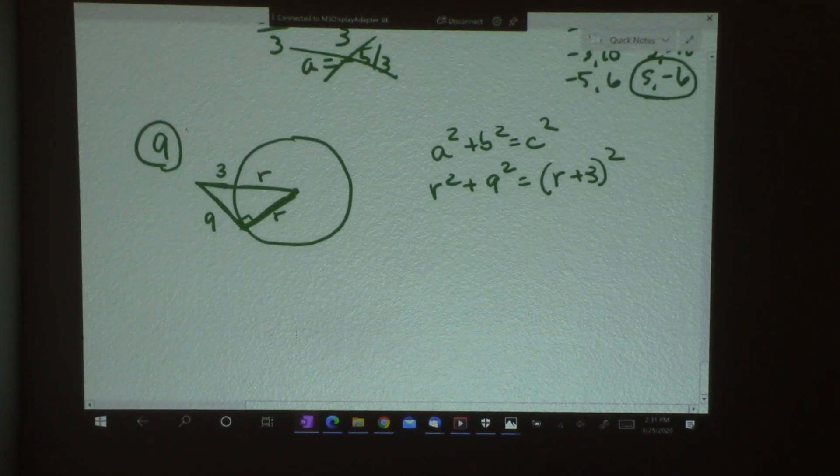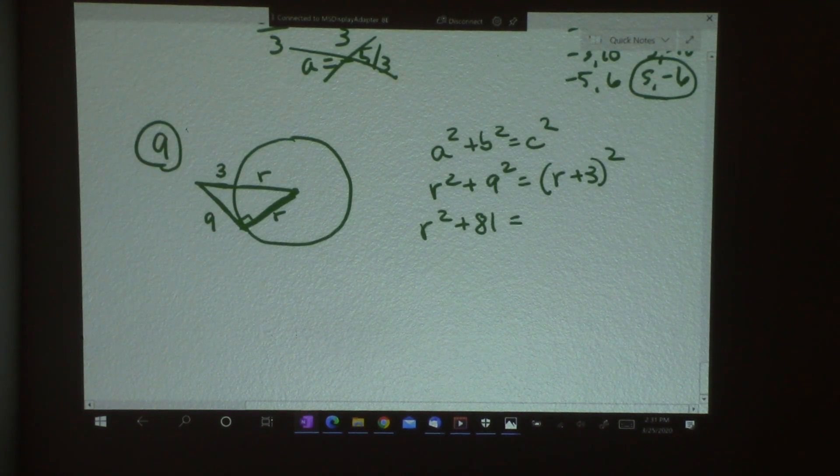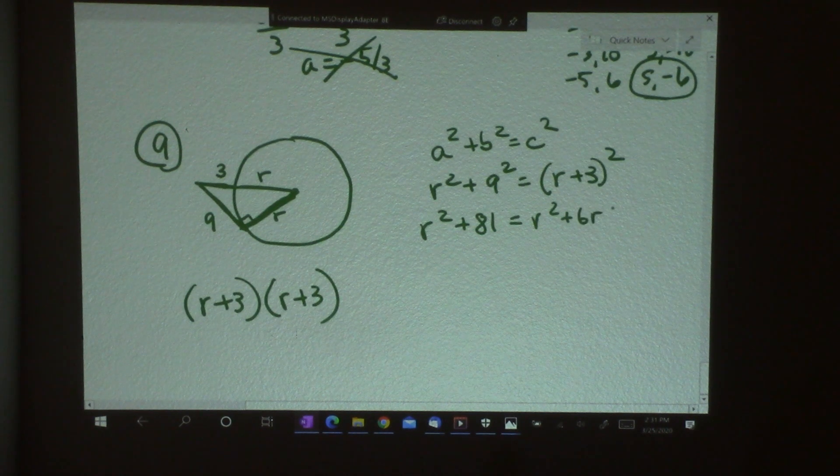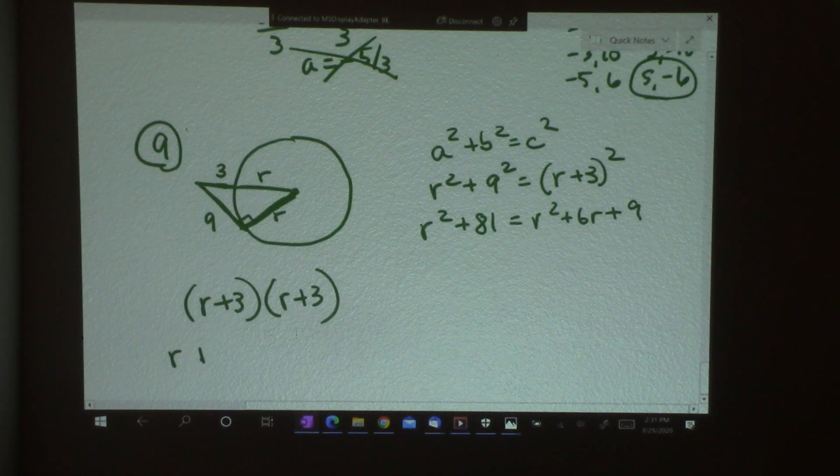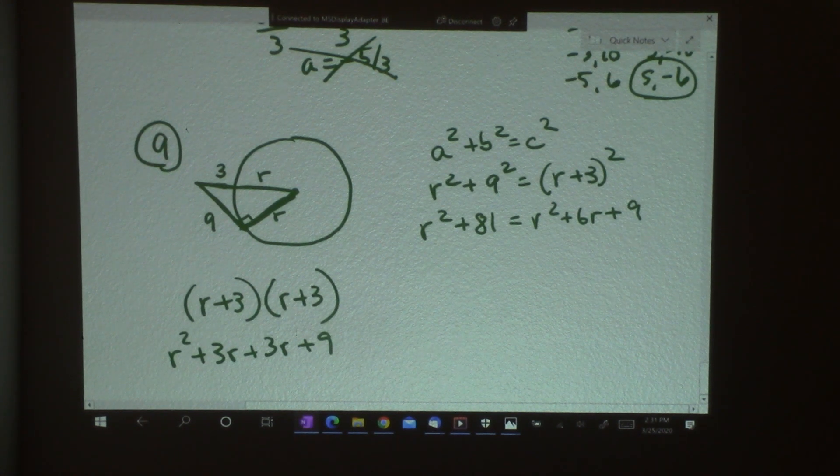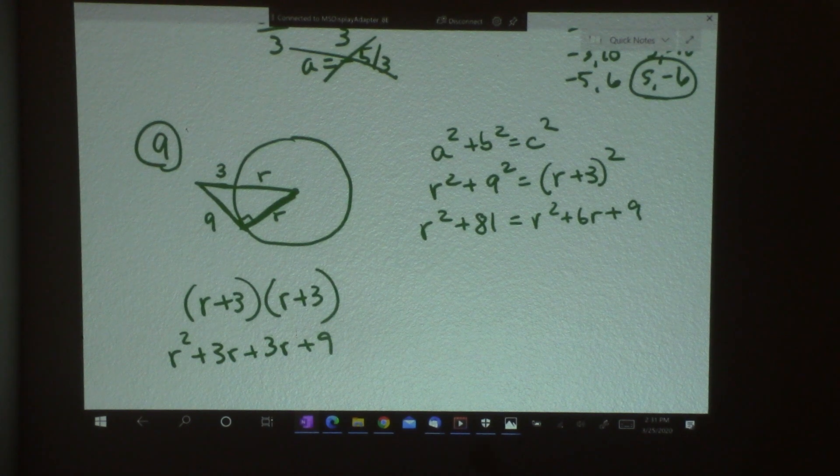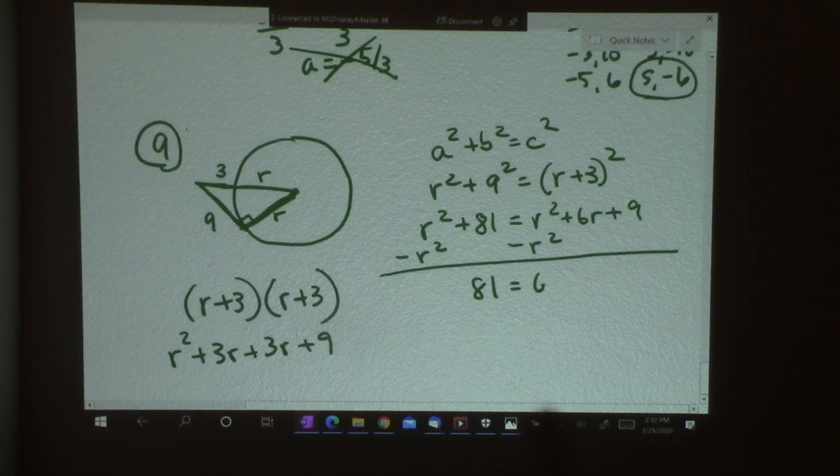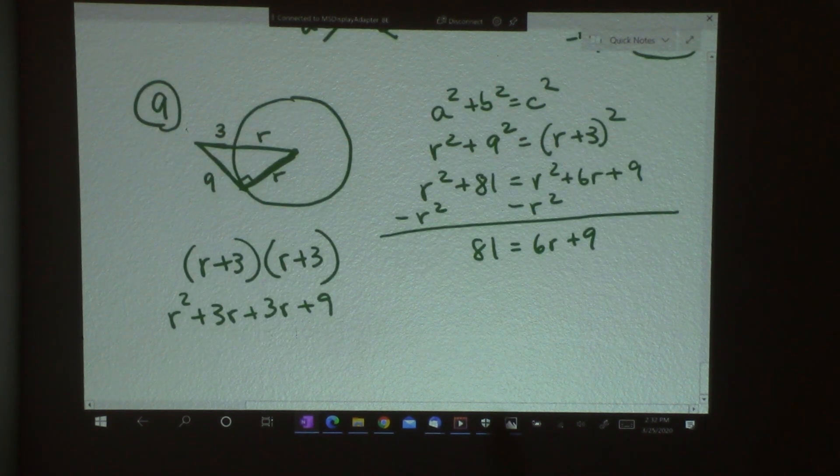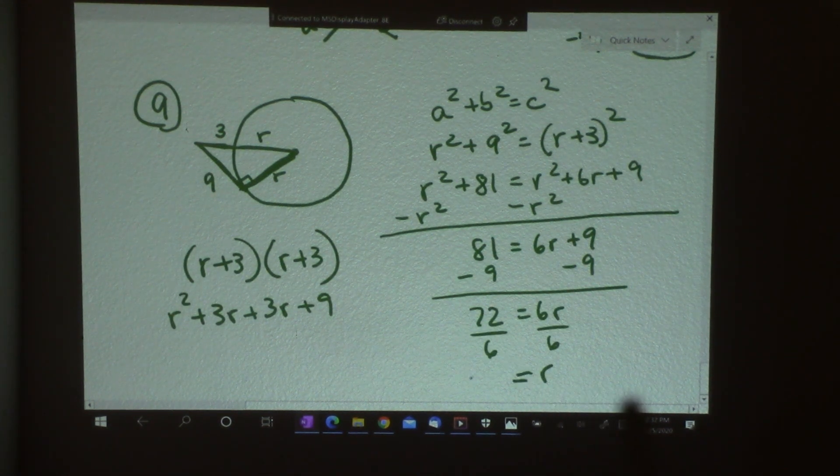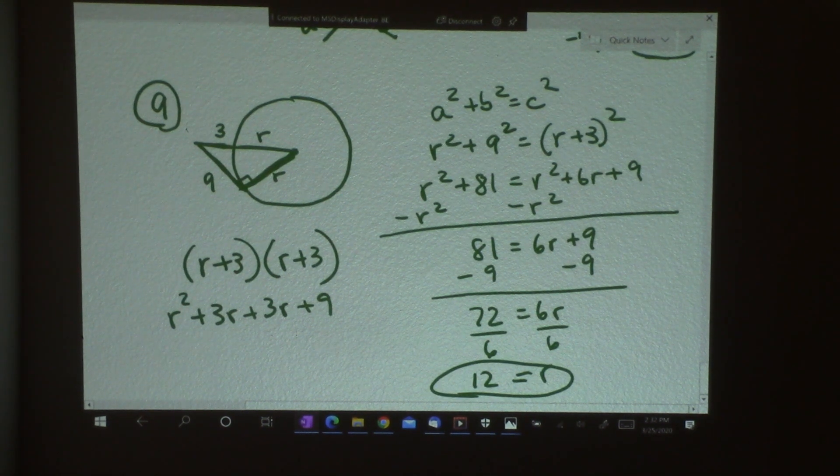So we're going to work it out. I've got R squared plus 81. Now this is R plus 3 times R plus 3. I have to FOIL in order to get that answer. So I'm going to get R squared plus 6R plus 9. I'll let you work that out here. Plus 3R plus 3R plus 9. Remember you can pause anytime you want. Now I need to solve. So I'm going to move the R squared over here. Look at what happens. That drops out. So I've got 81 equals 6R plus 9. And I'm going to subtract the 9. So I get 72 equals 6R divided by 6. Isn't that nice? R is 12. That's how I figure that out.